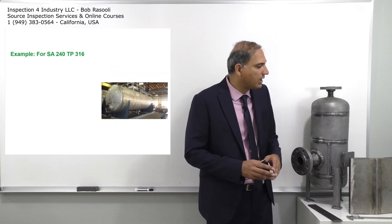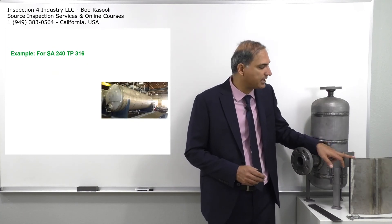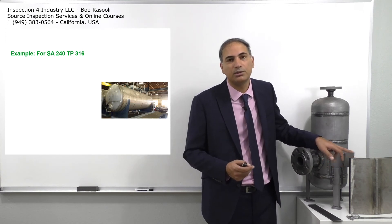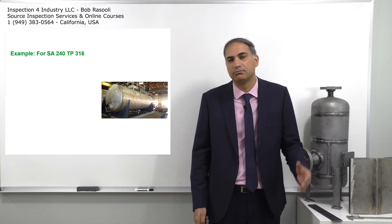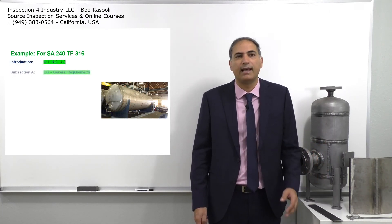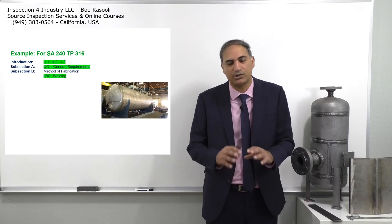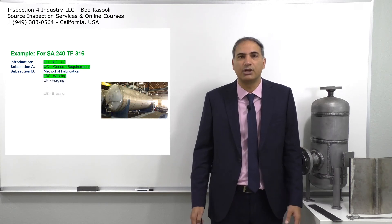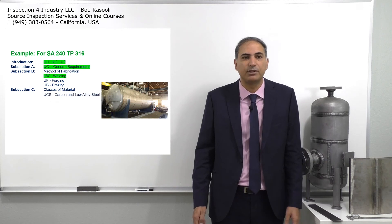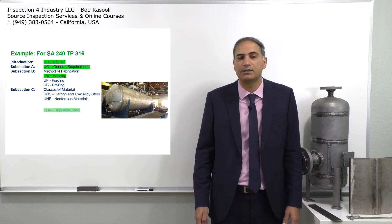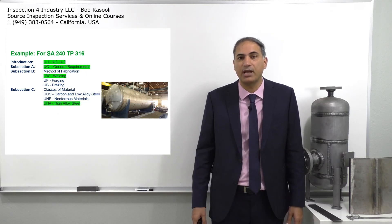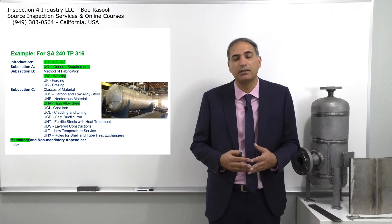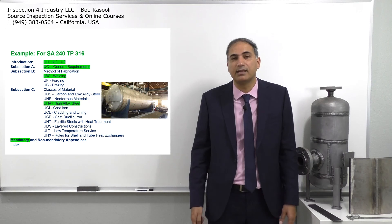Let's look at another example: a pressure vessel made of SA-240 TP316L stainless steel, as shown on the screen. Again, U1, U2, U3 apply as the general introduction, and UG applies. The fabrication method is welding, so UW applies. Forging and brazing do not apply. For material class, UCS does not apply. Non-ferrous UNF does not apply. High alloy steel UHA does apply. Mandatory appendixes such as Appendix 6 and Appendix 8 also apply.